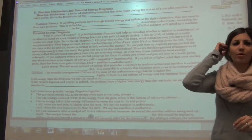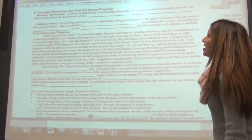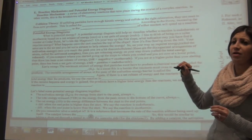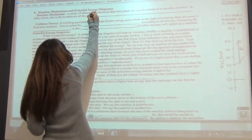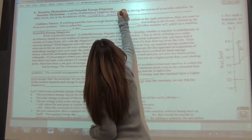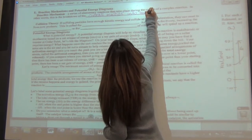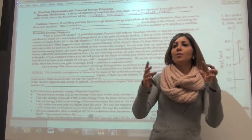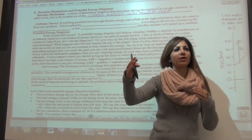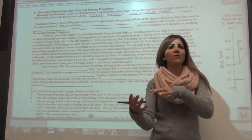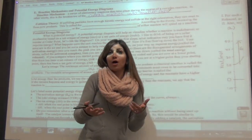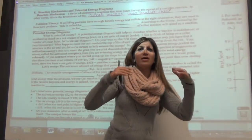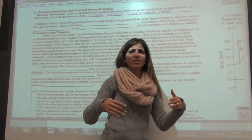Let's go through the notes and fill in some blanks. A reaction mechanism is a series of elementary reactions that take place during the course of a complex reaction — it's the breakdown of the overall reaction into smaller steps. Typically you see reactants and products, but there are usually intermediates and possibly catalysts — things that are formed and then used — which we call an intermediate, that happen inside a reaction.